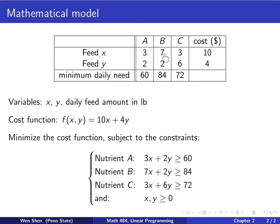And for B is the same. So 7X plus 2Y shall be bigger than 84 here. And for C, I have 3X plus 6Y shall be bigger than 72. And then, not surprisingly, we also have the positivity constraint.